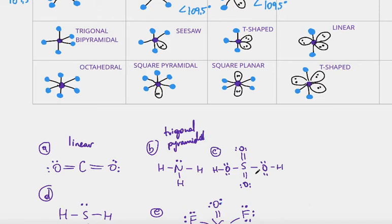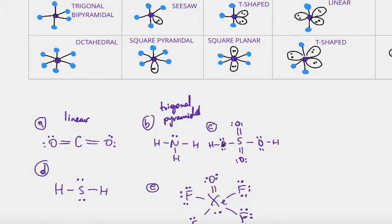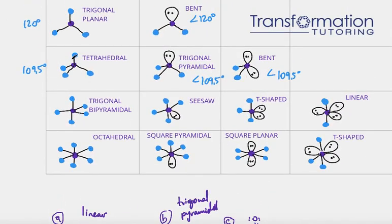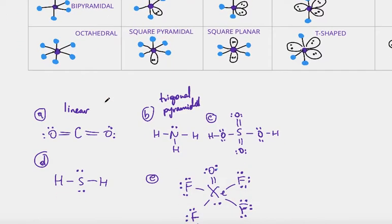Part C, the central atom is sulfur. It's connected to four other atoms — four oxygens — and sulfur has no lone pairs on it. Where do I see that? Right here: central atom connected to four other atoms, no lone pairs — tetrahedral.